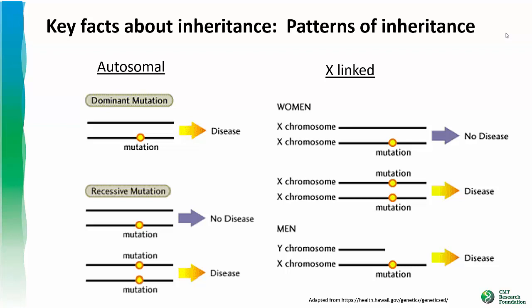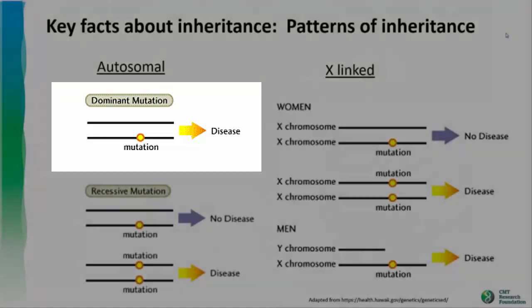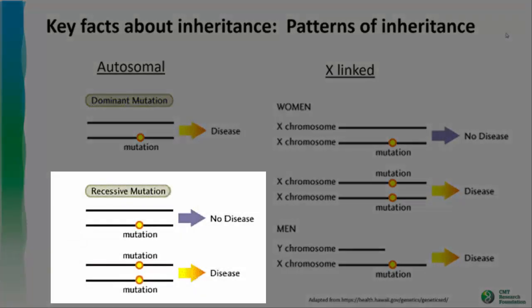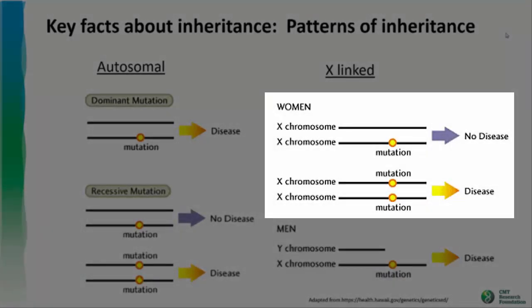Mutations can be inherited from your parents in several ways: autosomal dominant, autosomal recessive, or X-linked. If a gene is autosomal dominant, you only need one copy of the mutant gene to have the disease. If a gene is autosomal recessive, you need two copies of the mutant gene to have the disease. If a gene is X-linked, a male with the mutant gene will have the disease, whereas a female typically needs two copies to have the disease.